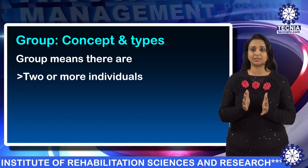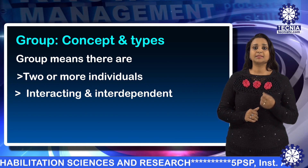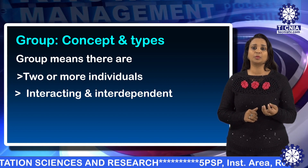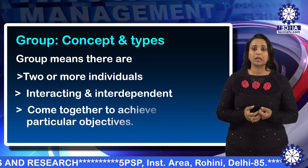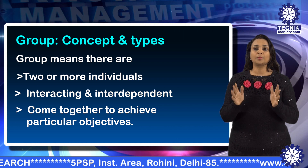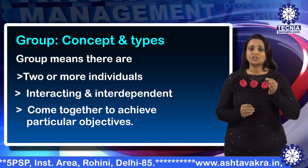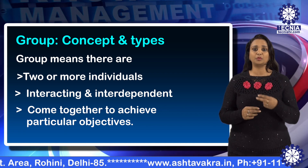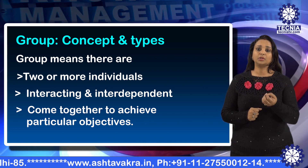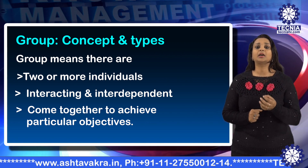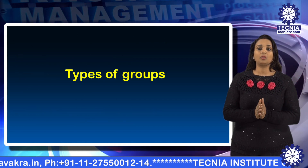Now let's discuss the concept of group. Number one, a group is defined as consisting of individuals who perceive the existence of a group and their membership in it. Second, we may define the group on the basis of a common motivation, goal, or objectives. Third, a group is two or more persons who are interacting with one another such that each person influences and is influenced by each other.